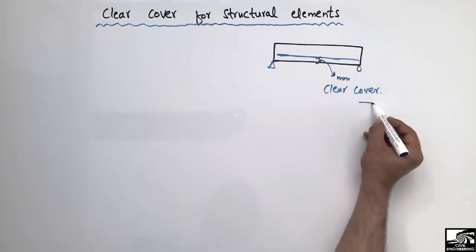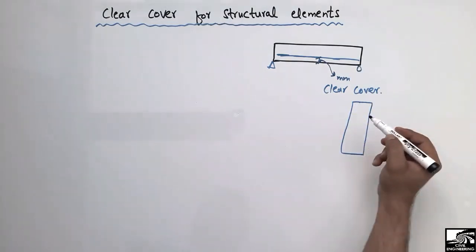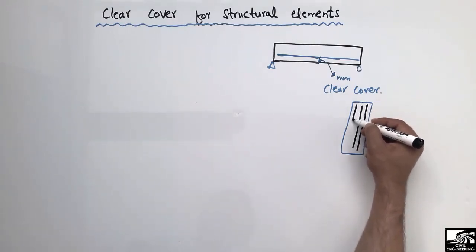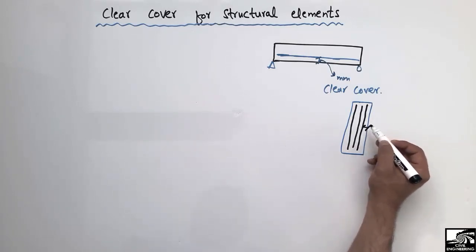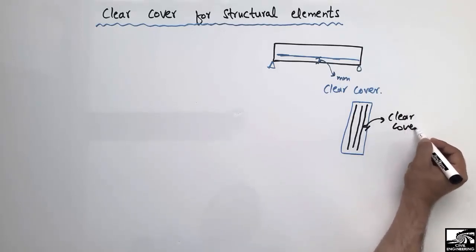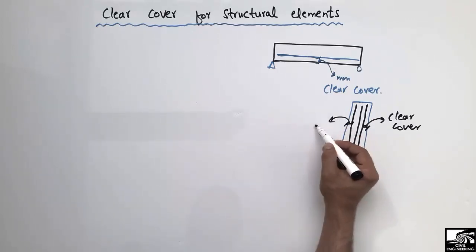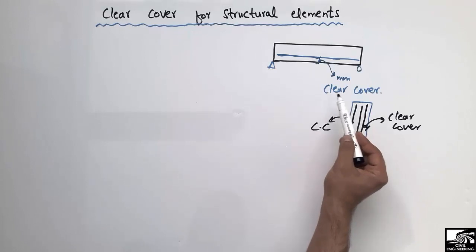If we take an example of a column, and we provide reinforcement in the column, there is some distance from the edge of the column to where the reinforcement starts. This distance in millimeters is called the clear cover. Similarly, from the other side, the distance from the edge of the column to the reinforcement is also called the clear cover.